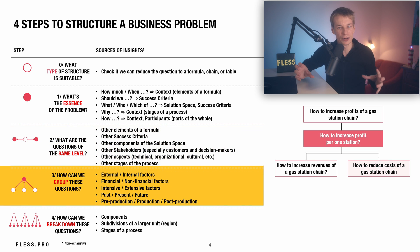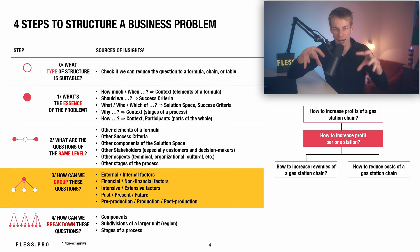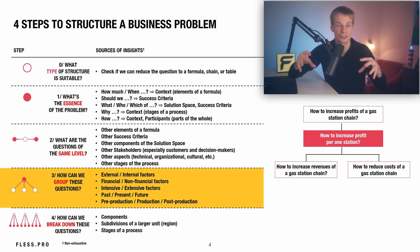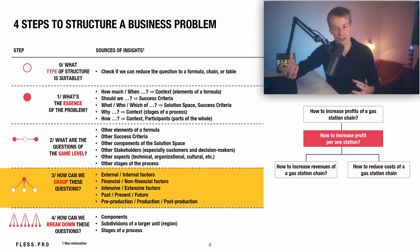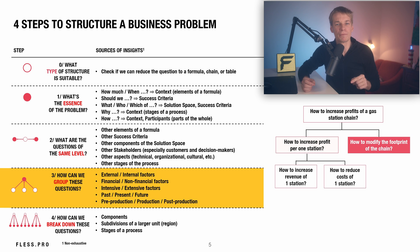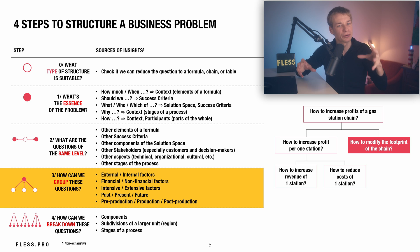Step three revolves around categorizing these questions. Here, strive for a MECE — mutually exclusive and collectively exhaustive — framework. Re-evaluate your structure to ensure no significant aspect is overlooked. Typical groupings could encompass external versus internal factors, financial versus non-financial factors, and timeline-based considerations like past, present, and future. For our case, elevating our view from one station to the entire chain's profitability, including its geographical footprint, is vital.